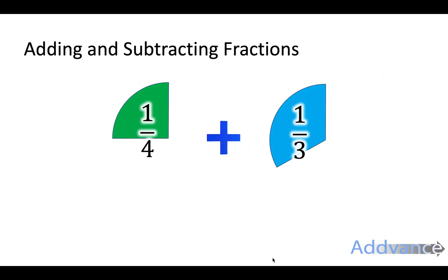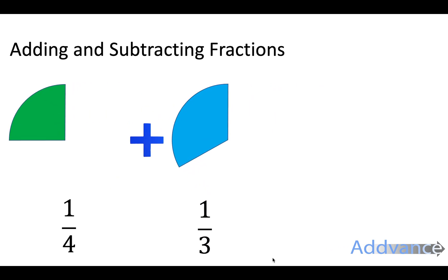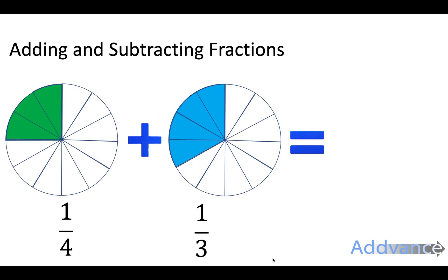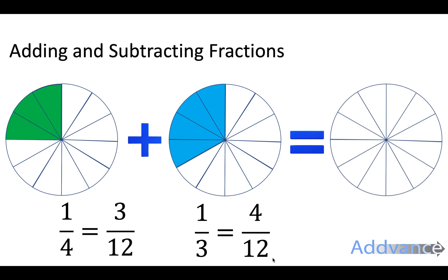So let's see this in action, 1 quarter plus 1 third. To add these two fractions I need to be able to compare them and I can only compare two fractions when they've got the same denominator. So 1 quarter is the same as 3 twelfths and 1 third is the same as 4 twelfths. You can see this in this picture here.